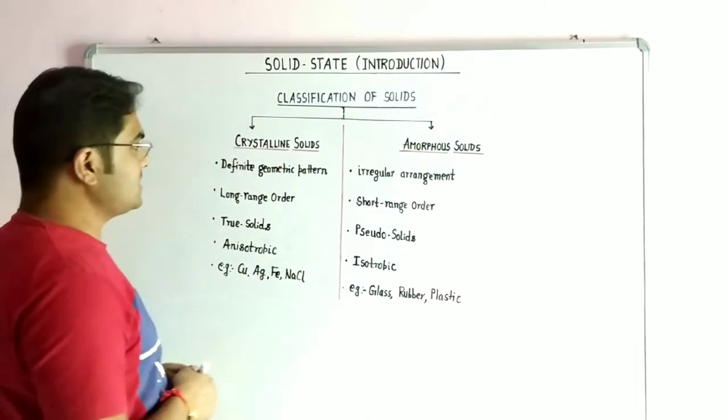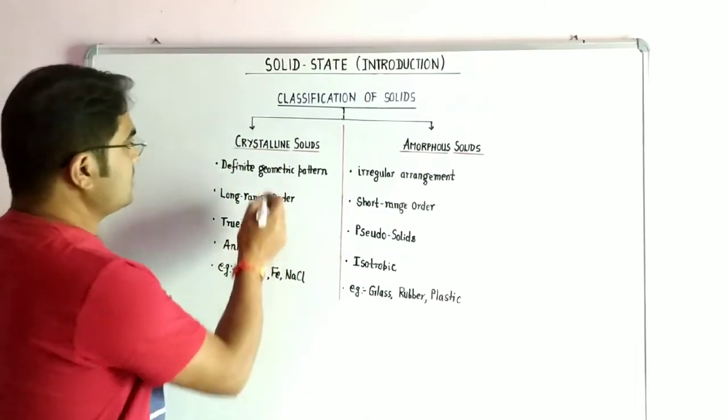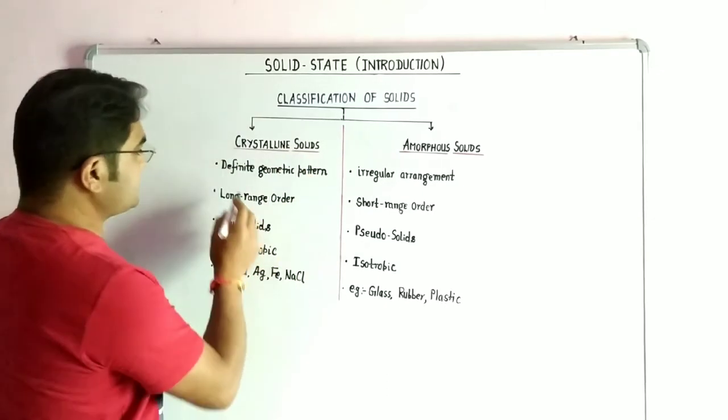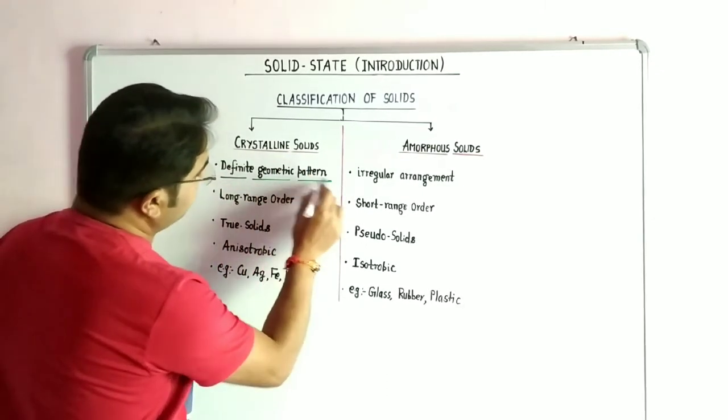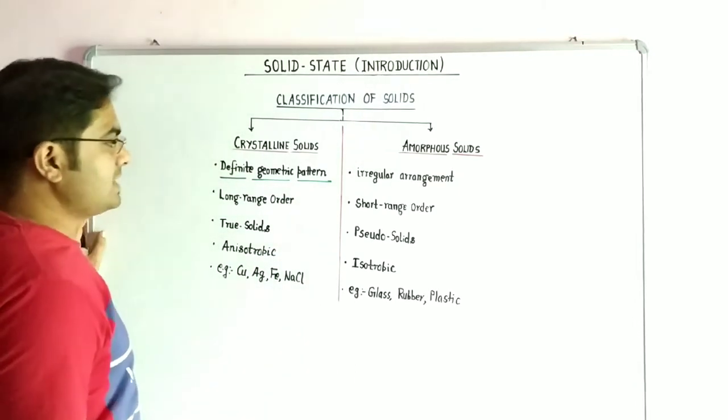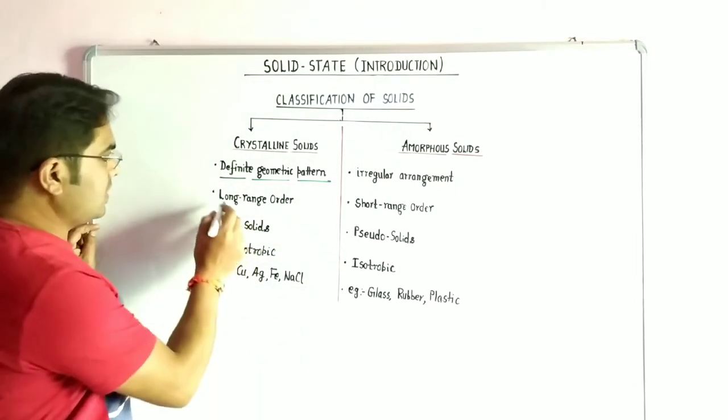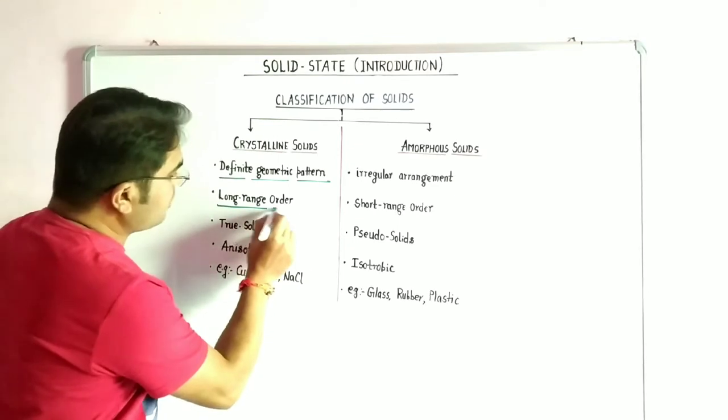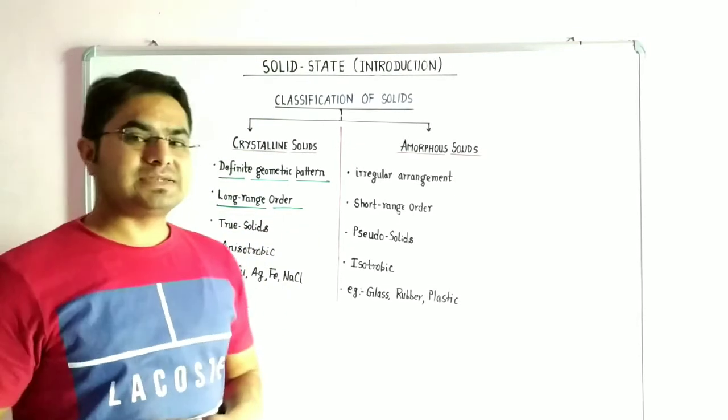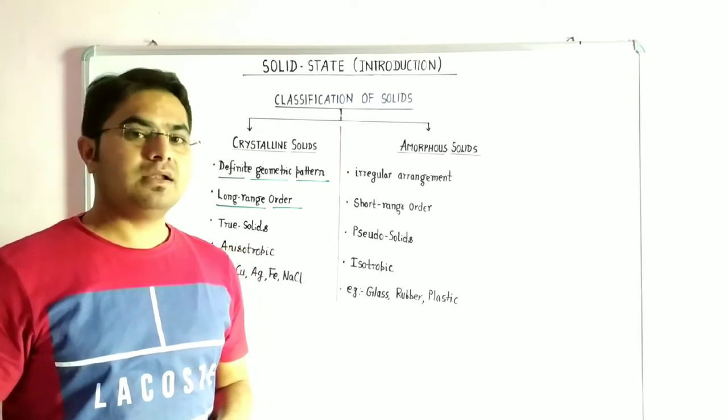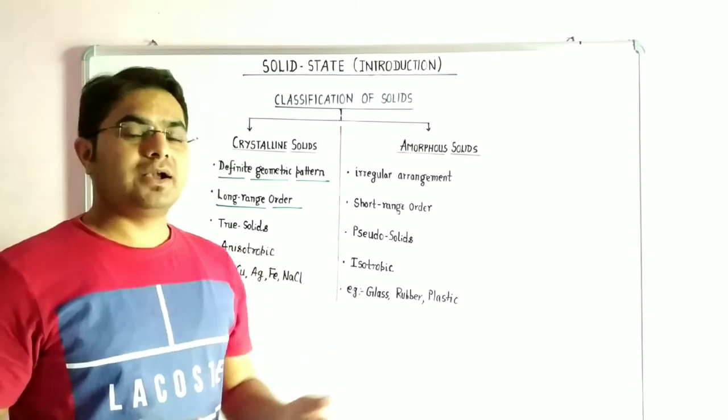Here are the properties of crystalline solids. Crystalline solids are those substances which possess definite geometric pattern, and the important one is they are long range order, means that they possess the definite geometric pattern over the long period of range.